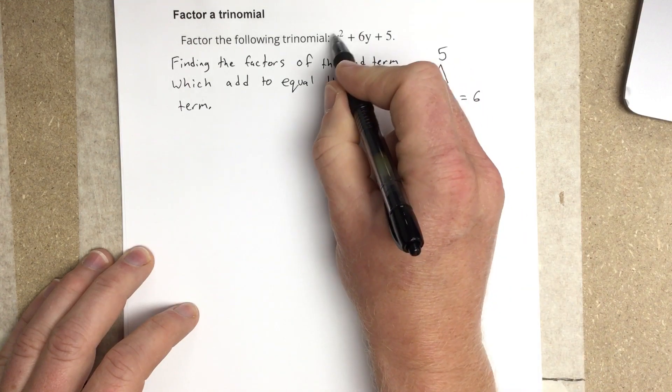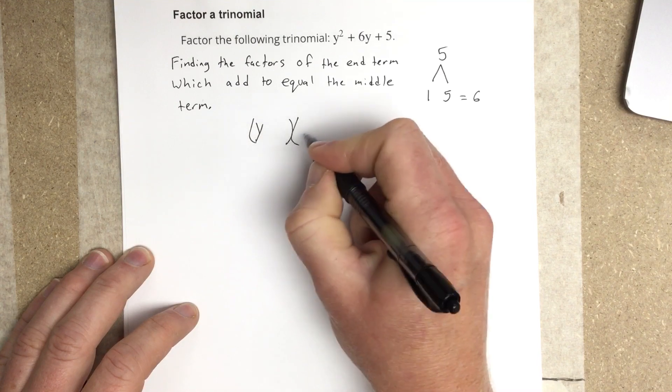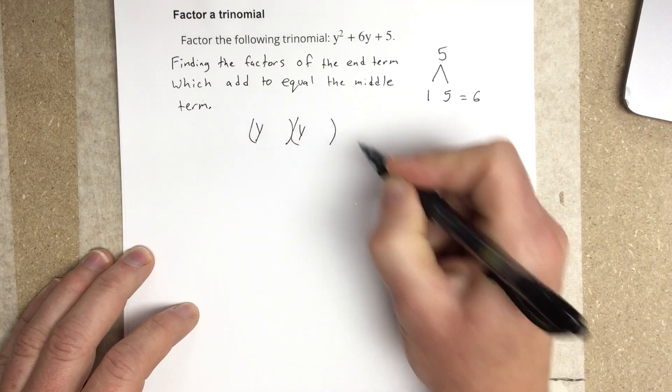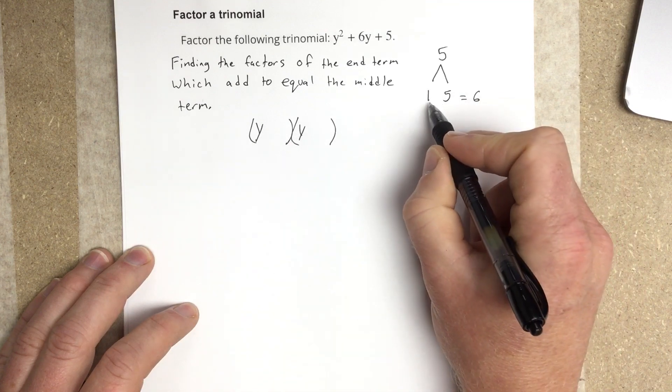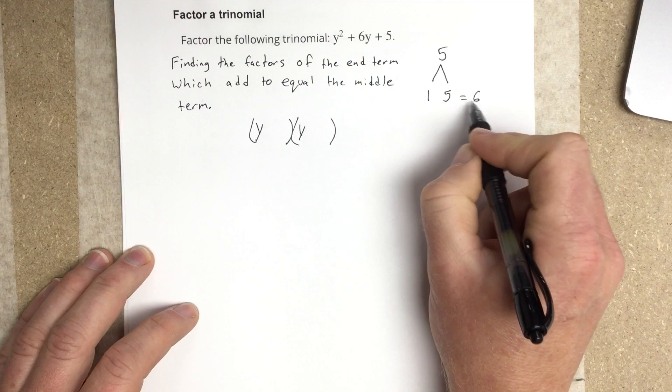So once we do that, then we can actually split this y squared term and say that we have two binomials with y starting each binomial. And each number that goes in here will be a positive 1 and a positive 5, because it has to add to 6.